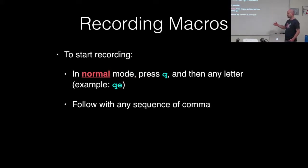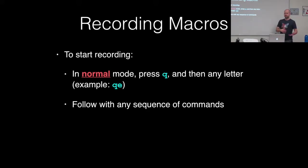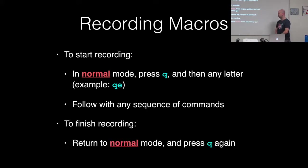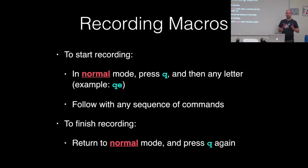Then you can just start typing any regular commands. You can go into insert mode, visual mode, change things around, and it will just record all of that into the macro. Once you're done recording, you go back to normal mode and press Q again. So if you didn't want to record a macro in the first place and just want that recording message to go away, you don't have to exit Vim — you can just press Q.